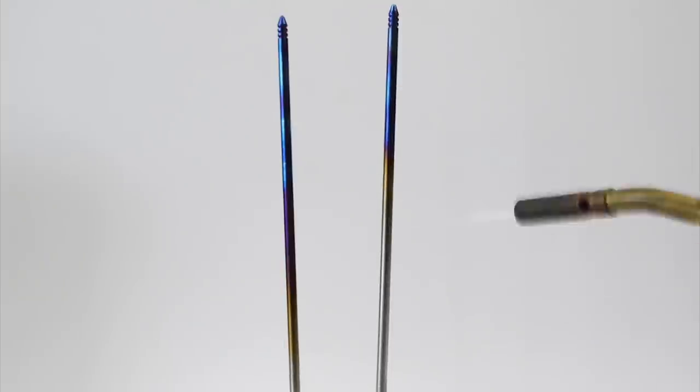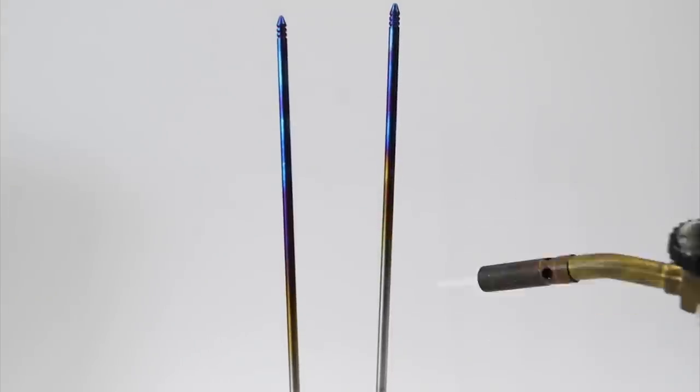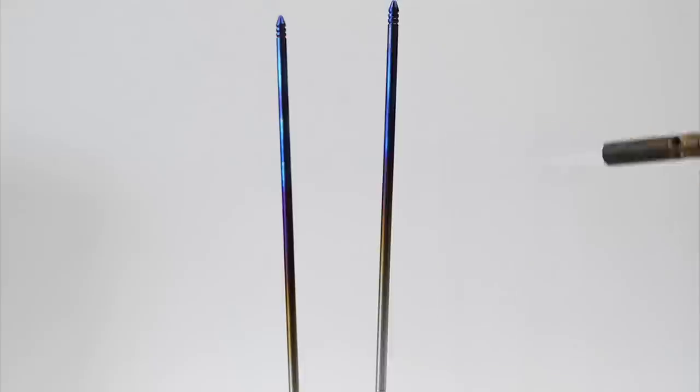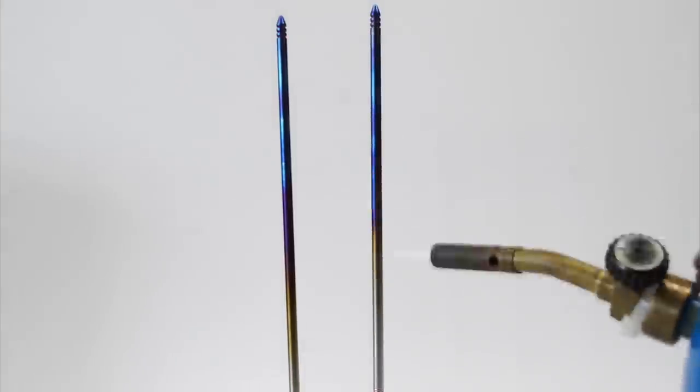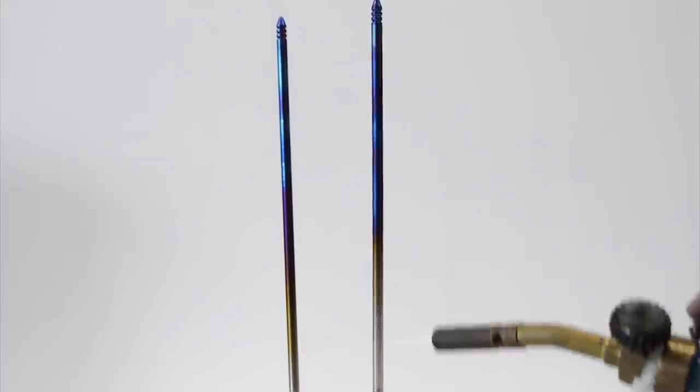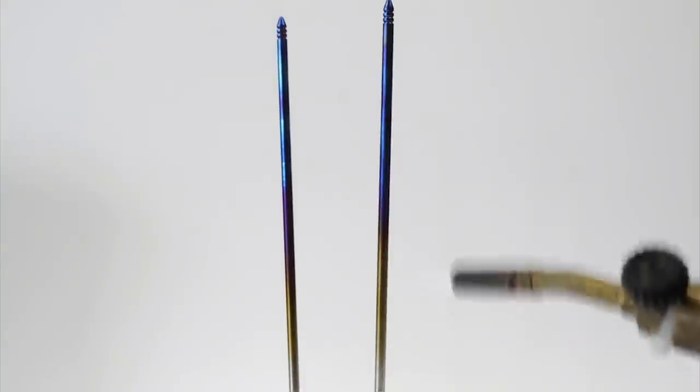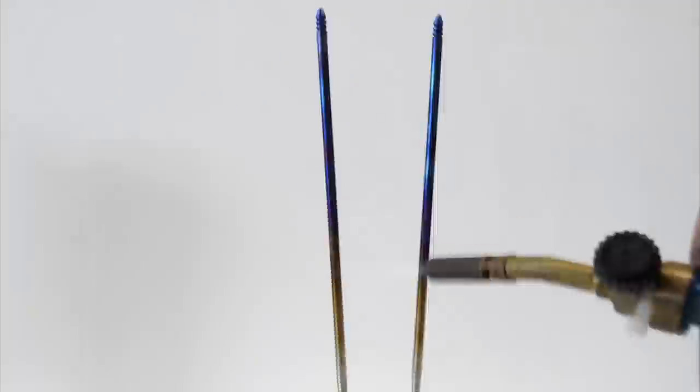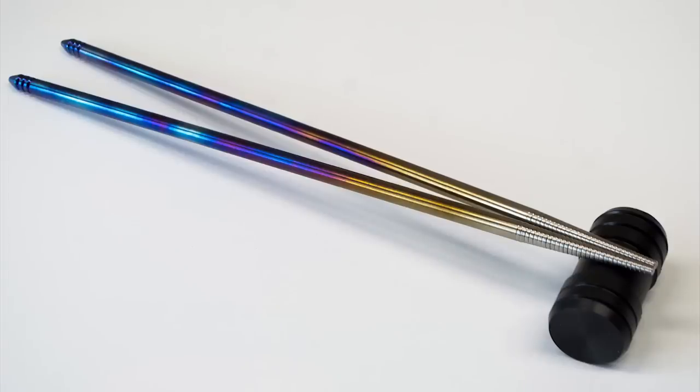The colors always appear in the same order, and we'll talk about why in a second. It starts with a light yellow, then gets more bronze, then pinkish, then purple, then vibrant blue. Once you hit blue, it'll start to lighten past that point, and eventually it'll hit a silvery white. If you keep going, you can get another round of colors, but they're usually muted comparatively. So, what's happening here, and why is titanium so magically colorful all of a sudden?